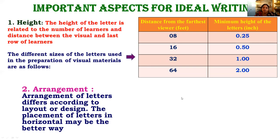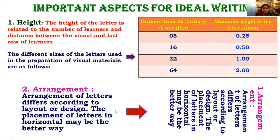The next point is arrangement. How you arrange the letters decides the efficiency of your visual aid. Arrangement depends on your layout or design. Placing letters in a horizontal arrangement is better than vertical. A horizontal arrangement is easy to read, while vertical presentation is cumbersome, difficult to read and understand — mainly because of our horizontal optical observation.